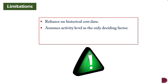The second limitation is that it assumes activity level is the only deciding factor. The formula picks total cost for the highest and lowest activity level to work out variable and fixed cost per unit. However, other factors — like the level of wastage — can cause an activity level to have an increased total cost unrelated to the number of units produced.